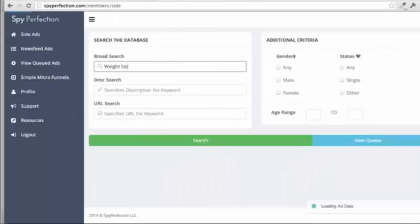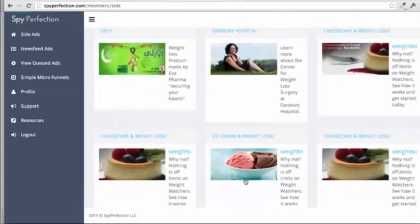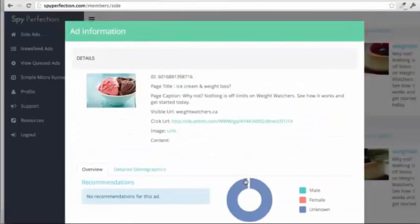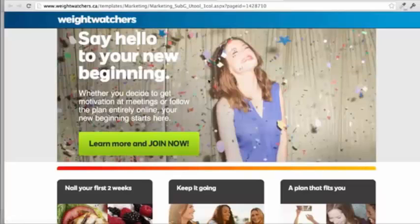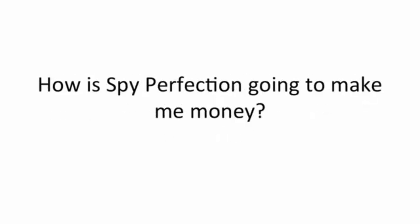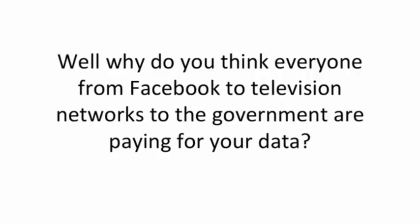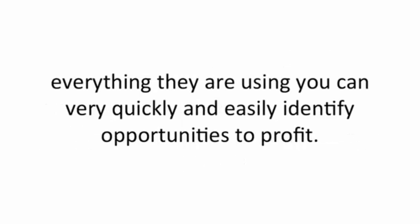Why create fresh campaigns yourself and risk spending money on duds when you can use Spy Perfection to track down profitable campaigns that others are already testing on their own budget? With a few clicks of the mouse, I've been able to find thousands of ads running for the fitness market. I can look through these results for a campaign similar to what I want to run, or click through and find out more information. You can see all the ads being used, gather inspiration, look at the demographics marketers are targeting, and even see what landing pages these offers are leading to.